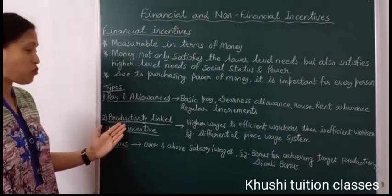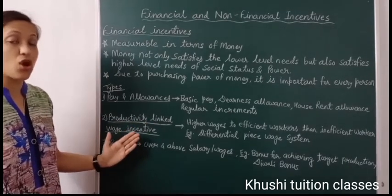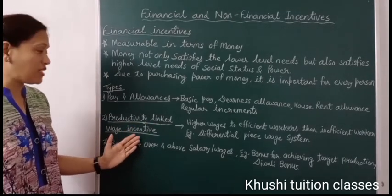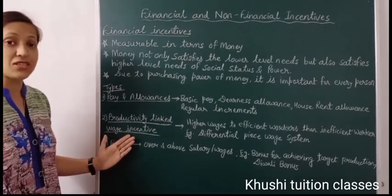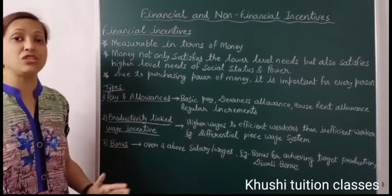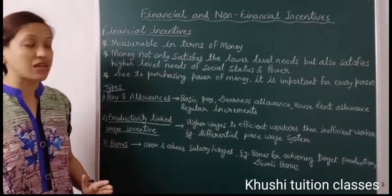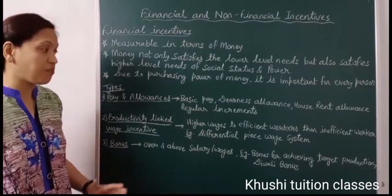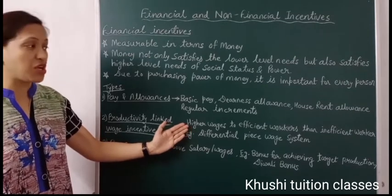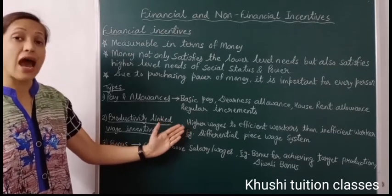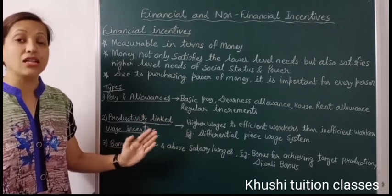The second financial incentive is productivity linked wage incentives. In some organizations, wages are given on the basis of a worker's productivity and performance — for example, higher wages to an efficient worker as compared to an inefficient worker,